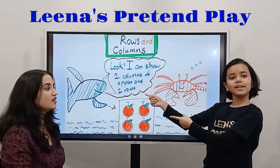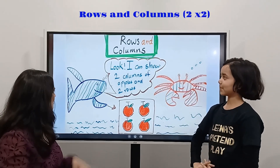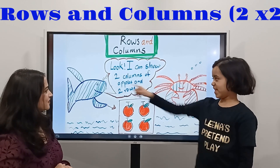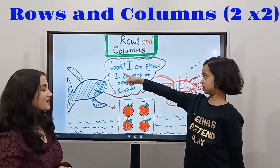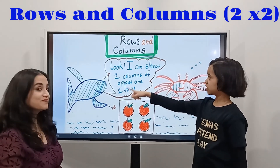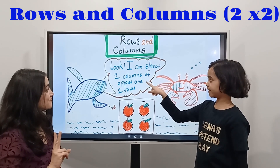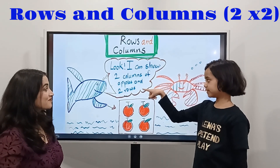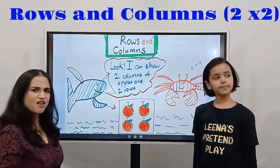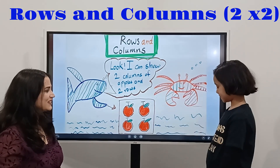Rows and columns. Hey Lina, what does Friszy's game look like? So this Friszy's game looks — it's still the fifth. I can show two columns of apples and two rows. Oh! How? Like this.